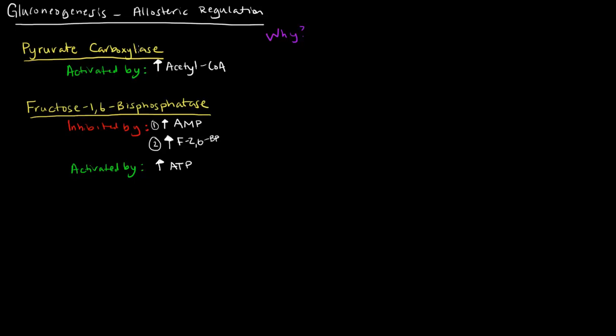Pyruvate carboxylase is the first reaction of gluconeogenesis in which we take pyruvate and turn it into oxaloacetate on its way back to becoming glucose.